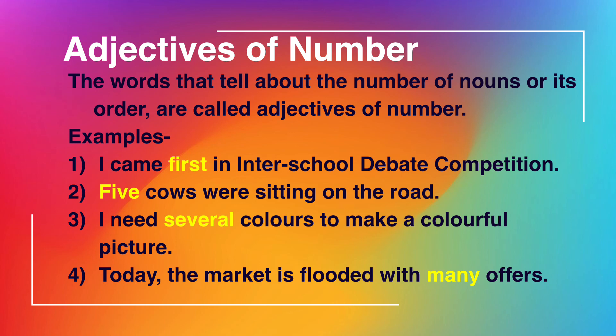Another example: 'Five cows were sitting on the road.' We are talking about cows, but how many? Five — a particular number is given, so 'five' is an adjective of number. Third example: 'I need several colors to make a colorful picture.' Several refers to a number we cannot count, and these adjectives go with uncountable nouns. Similarly, 'Today the market is flooded with many offers' — we cannot count the offers, so we use 'many'. All of these tell us how many of a noun there are — these are adjectives of number.